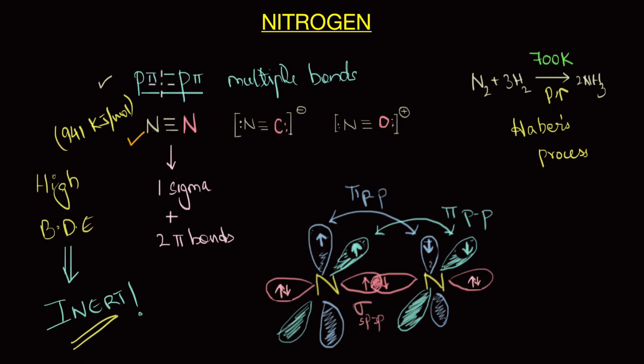Now, coming back to nitrogen, this ability to form strong p pi p pi bonds makes nitrogen very special because unlike nitrogen, the rest of the members cannot form these bonds. This is because as you go down the group, their atomic size increases, and their atomic orbitals are much larger or more diffuse than nitrogen and that means they cannot form effective overlapping as you can see in this case.